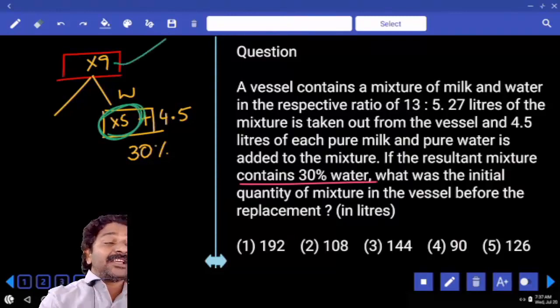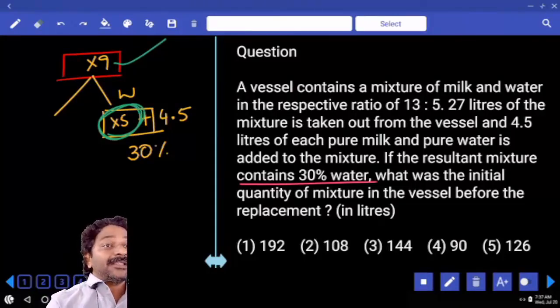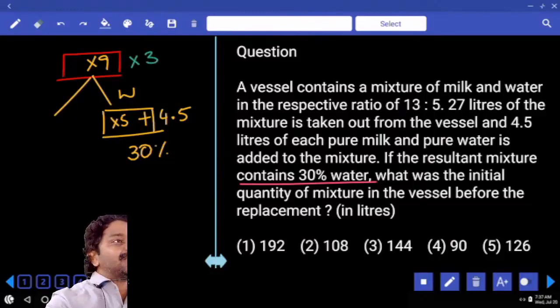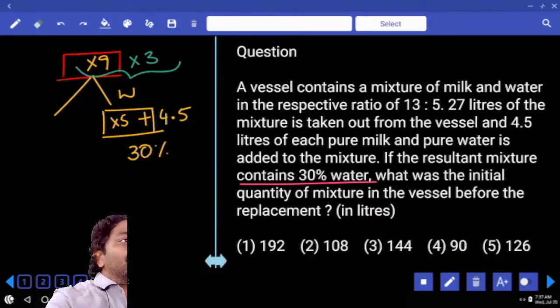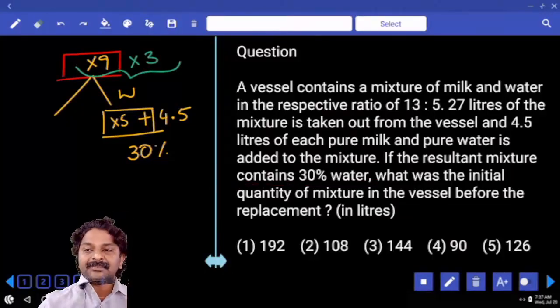If the original number is 9 multiple, then you will get only 5 multiple. But we are expecting 3 multiple. Then your original number should be not only 9 multiple, apart from that it has to be a multiple of 3 also. That means total quantity should be a multiple of 27.